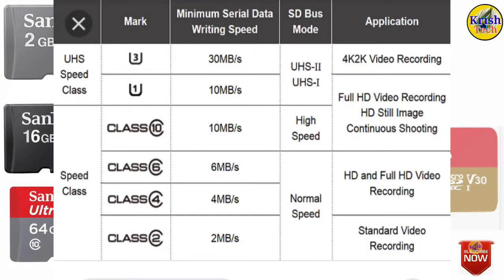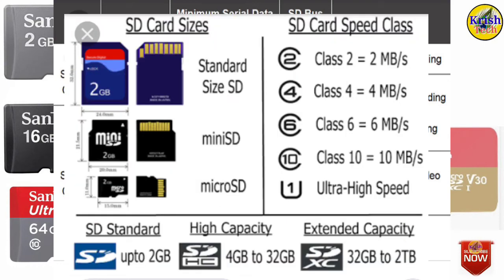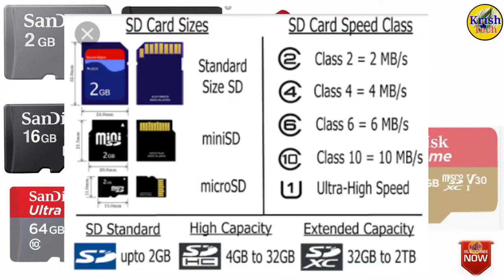If you look at the mini-SD, you can see Class 2, Class 4, and Class 6. Class 4 is 4 MB per second. Class 6 is 6 MB per second.